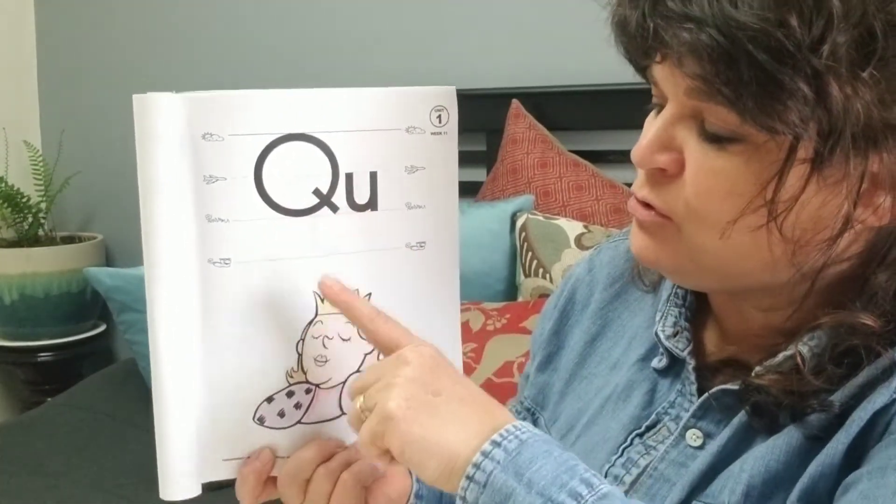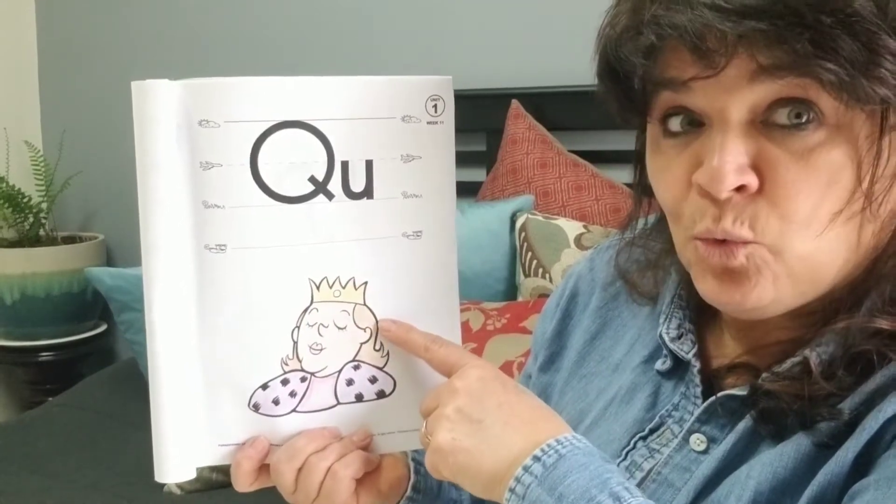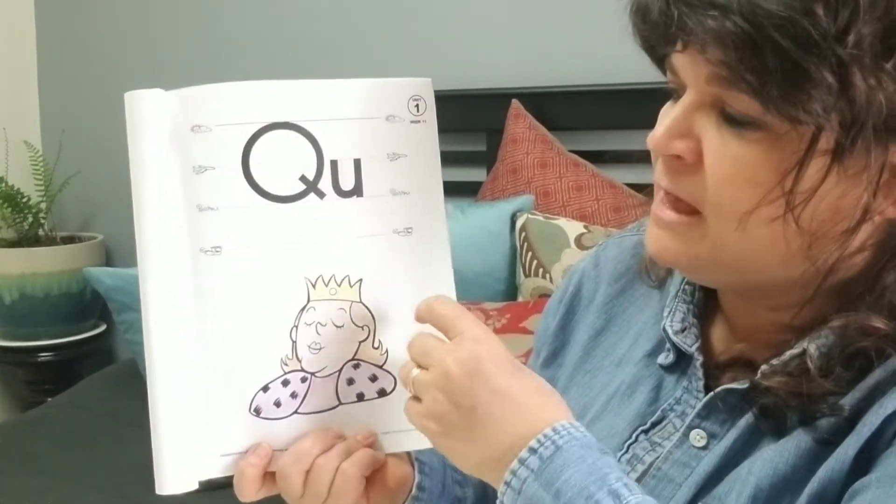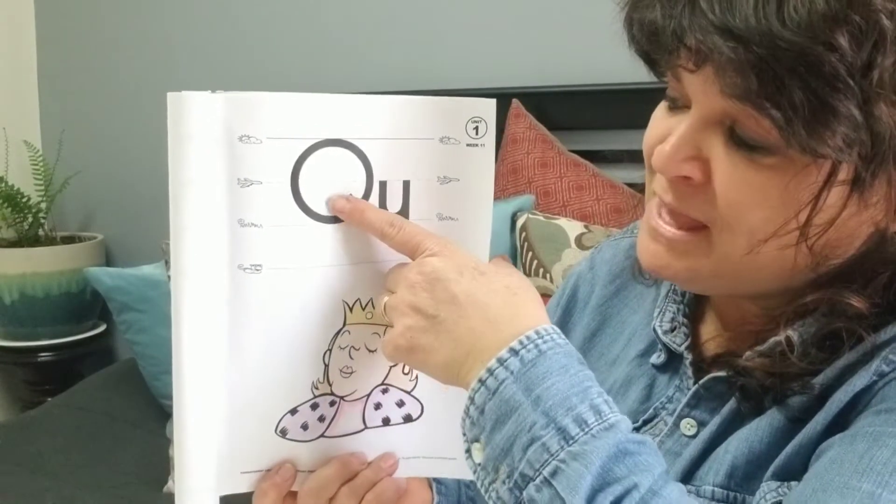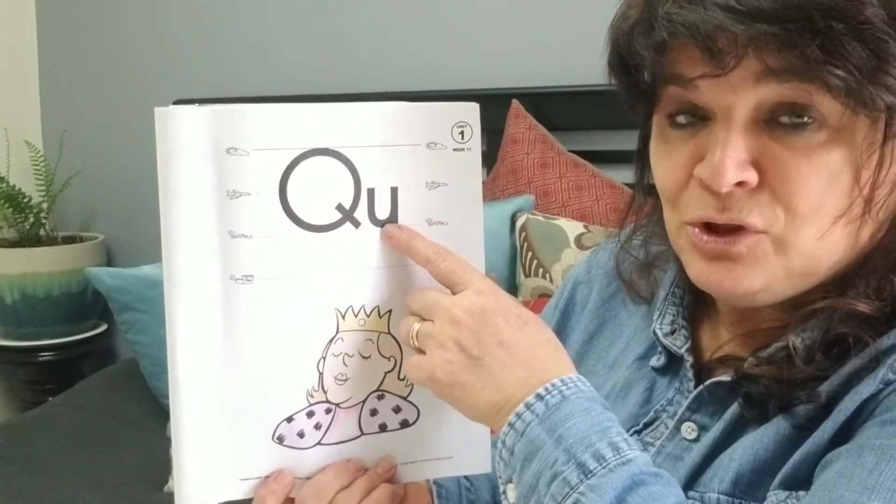Q and U begin words like queen. Uppercase Q. Lowercase U. Big Q. Little U.